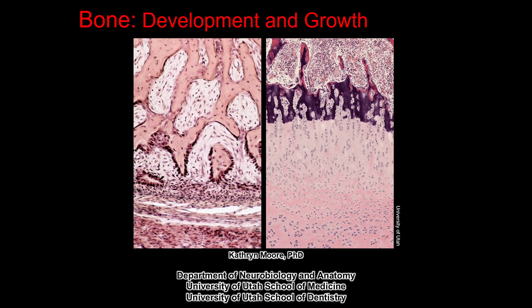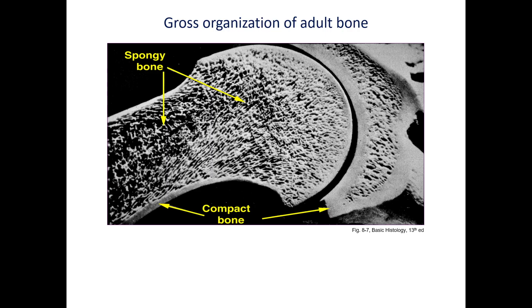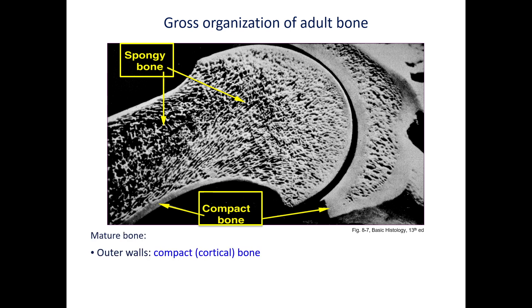Today we'll discuss bone development and growth. Recall that bones are constructed of two types of bone tissue: compact bone and spongy or trabecular bone. Compact bone comprises the outer wall of mature bone, while the inner layer or marrow cavity consists of the more porous bone — the trabecular, spongy, or cancellous bone.